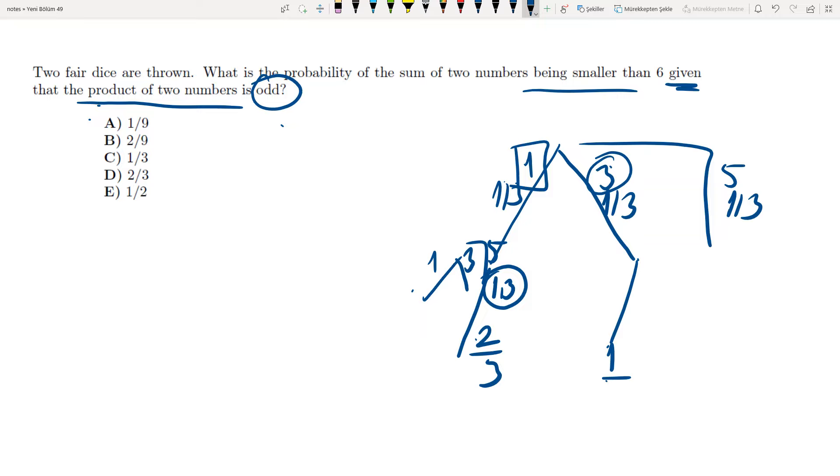Three plus three is six, which is not smaller than six. And three plus five is not smaller than six. So it is one over three. And if I have five on the first one, the probability is zero because one, three, five, none of them works.